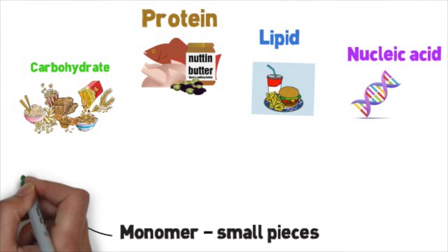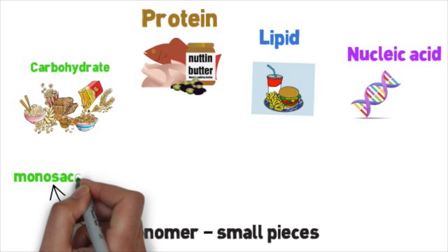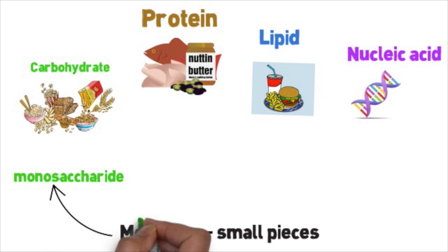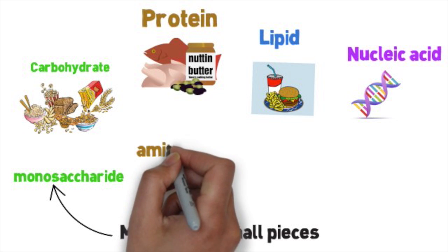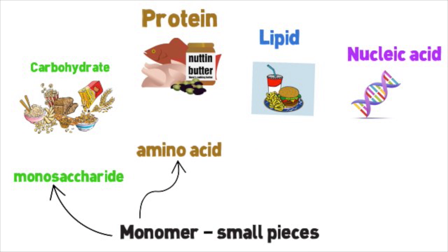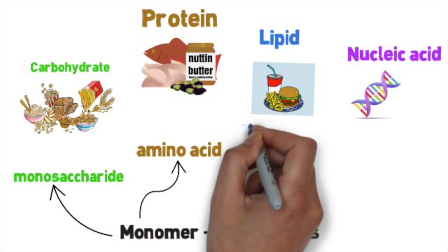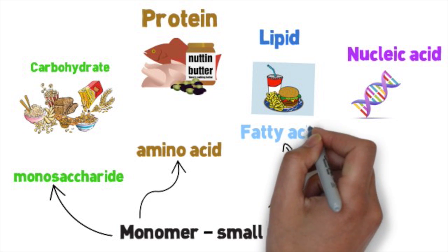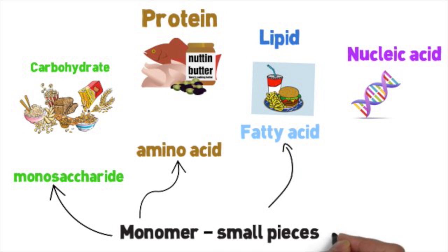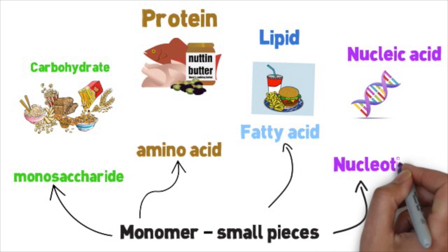The monomer of carbohydrates is a monosaccharide. The monomer of proteins is an amino acid. The monomer for lipids is a fatty acid. Lastly, the monomer for nucleic acid is a nucleotide.